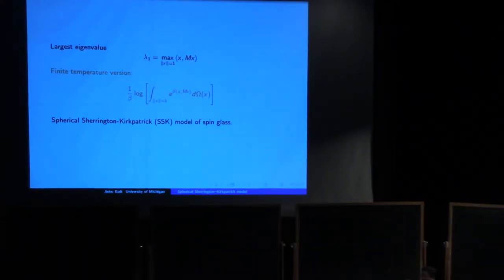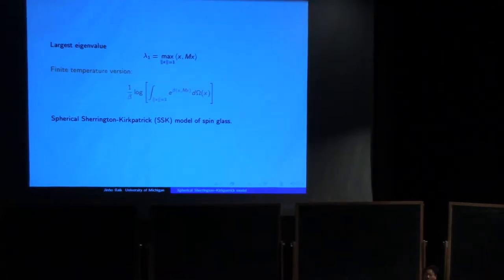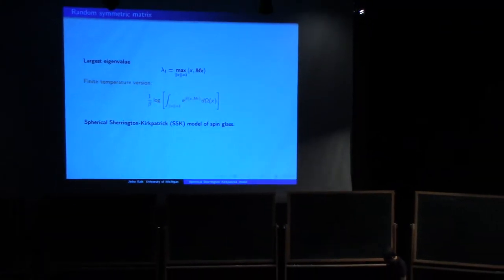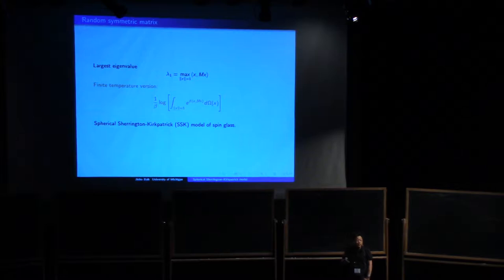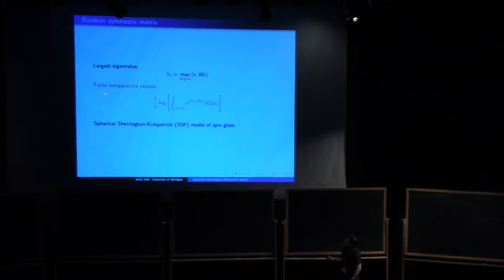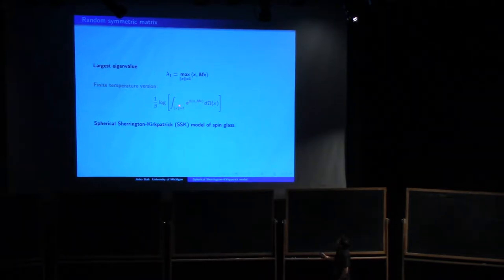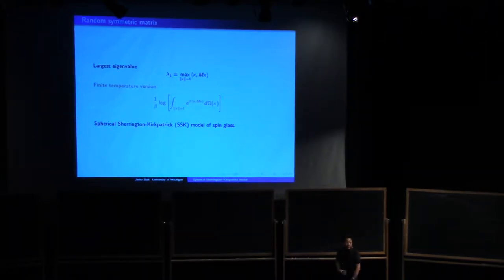We know that lambda_1 converges to some number and it fluctuates like a Tracy-Widom distribution. The question we asked ourselves was: this looks like a max, so how about you replace the max by the finite temperature version of it? So instead of max over the unit sphere, you integrate over the unit sphere e to the beta of the same Hamiltonian.